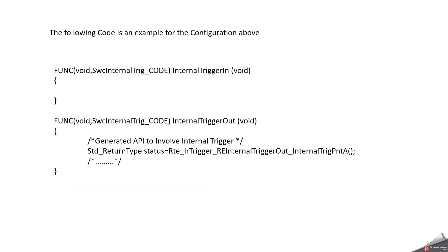This is the C code that AutoSAR developers typically write for this configuration. There are two function definitions: one is 'internal_trigger_in' and the other is 'internal_trigger_out'. Inside the 'internal_trigger_out' function, we have an RTE_IR_Trigger call and we are not passing any data. This is the main use case of the internal triggered occurred event.